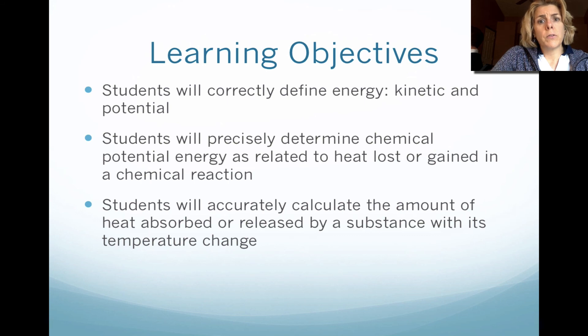First, you're going to make sure that you understand what is energy and the types of energy, which are kinetic and potential. Then you're going to determine whether potential energy is lost or gained in a chemical reaction. And lastly, you're going to calculate the amount of heat that is absorbed or released by a substance with temperature change.